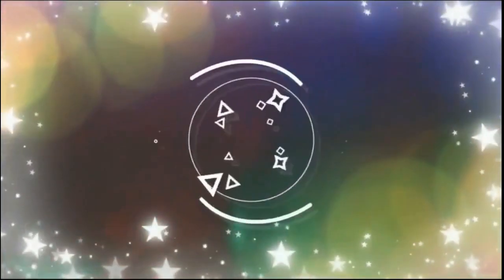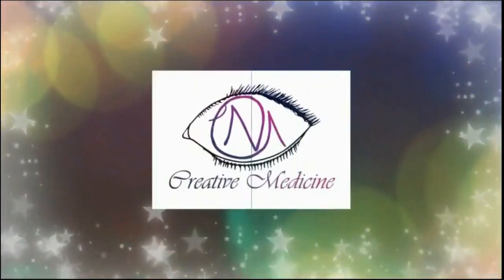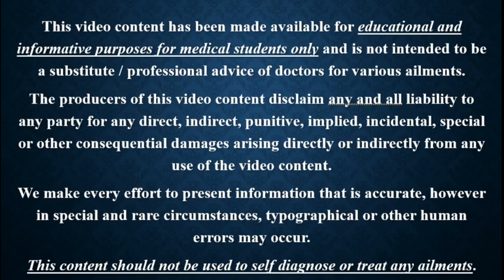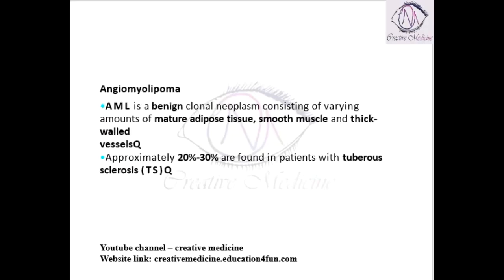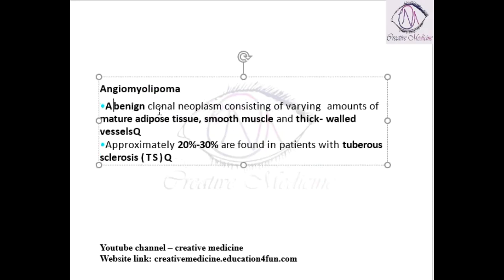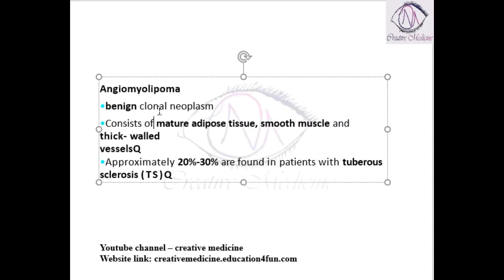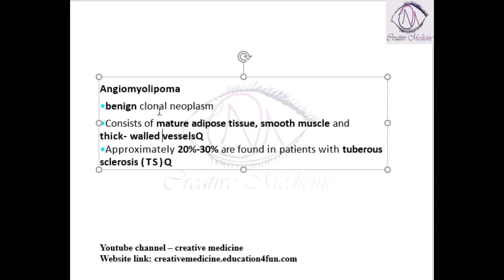Hello friends, welcome to Creative Medicine. In this lecture, we will learn about angiomyolipoma. Angiomyolipoma is a benign clonal neoplasm. It consists of mature adipose tissue, smooth muscles, and thick-walled blood vessels.